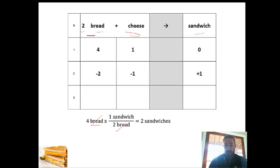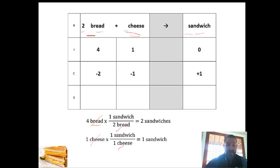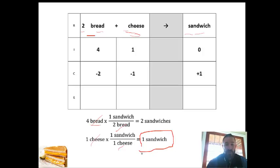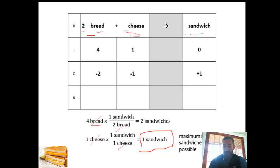We do the same with the other reactant — the cheese. One cheese with a one-to-one ratio between cheese and sandwich gives us one sandwich. We can't actually make two sandwiches because we don't have enough cheese, so we end up making one sandwich. That's the amount of product we actually produce — the maximum number of sandwiches is one.